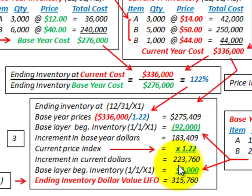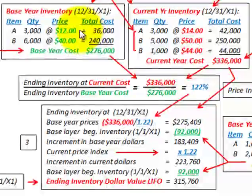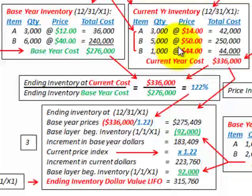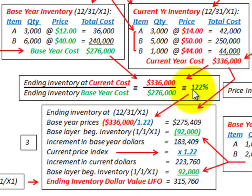To summarize: we went through how to develop and calculate an internal price index using ending inventory values at the base year cost and at the current year cost. Based on that price index, we then calculated the ending inventory on a dollar value LIFO basis.